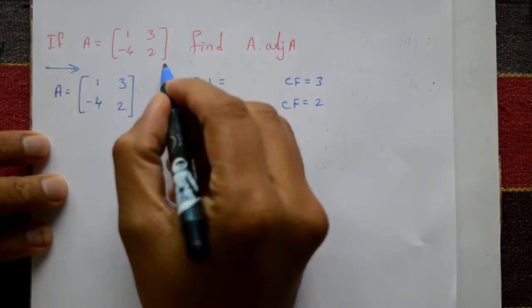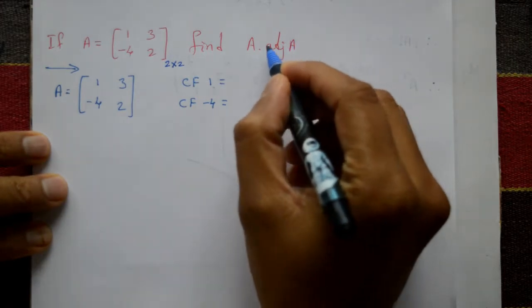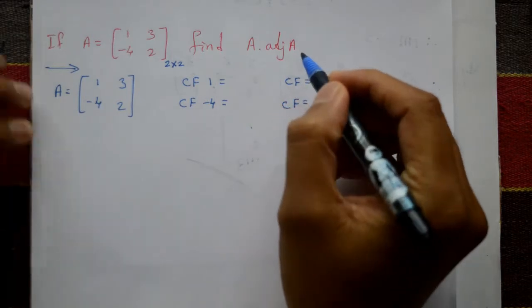If matrix A is a 2×2 matrix, find A times the adjoint of A. To solve this multiplication of matrix A into adjoint of A, first we need to find what is adjoint of A.